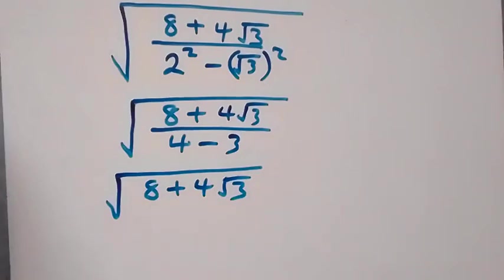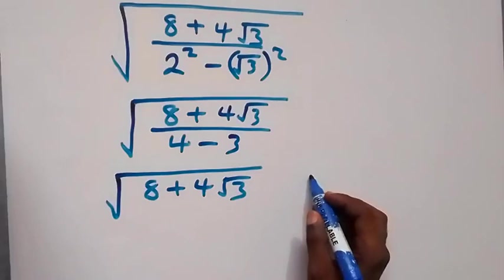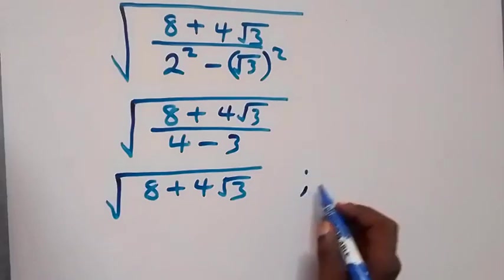Then this is same thing as square root of 8 plus 4 root 3, then over 1, which is same thing as 8 plus 4 root 3. Then if we can write this in this format, that is when we have root...